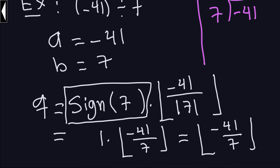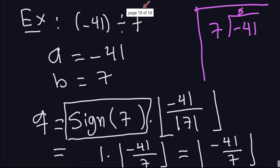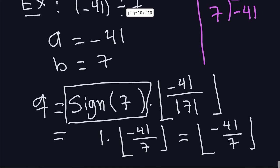The only thing I have to do now is compute the floor of that number. So Q in this case would be the floor of this number. Basically, the quotient of negative 41 divided by 7 is just this floor. We're going to compute that by placing the number — negative 41 over 7 — on the real line.